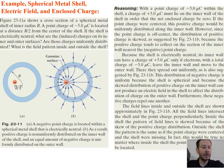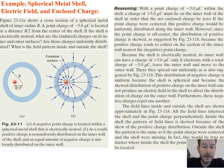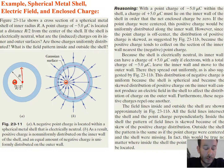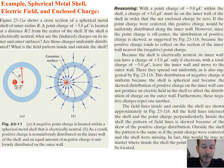Let's do an example. The figure shows a cross-section of a spherical metal shell of inner radius r, and a point charge of negative 5 microcoulombs is located at a distance of r over 2 from the center of the shell. So the total distance is r and the charge is r/2 away from the center. If the shell is electrically neutral, what are the induced charges on its inner and outer surfaces? Are those charges uniformly distributed? And what is the field pattern inside and outside of the shell?